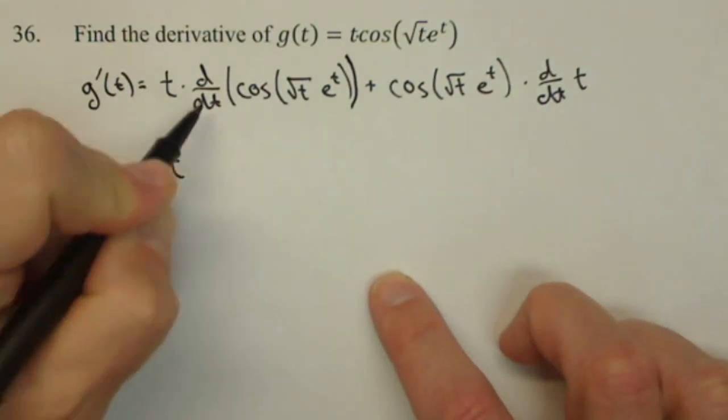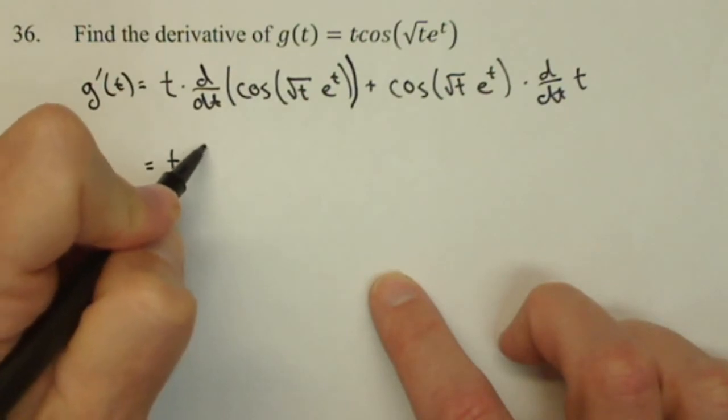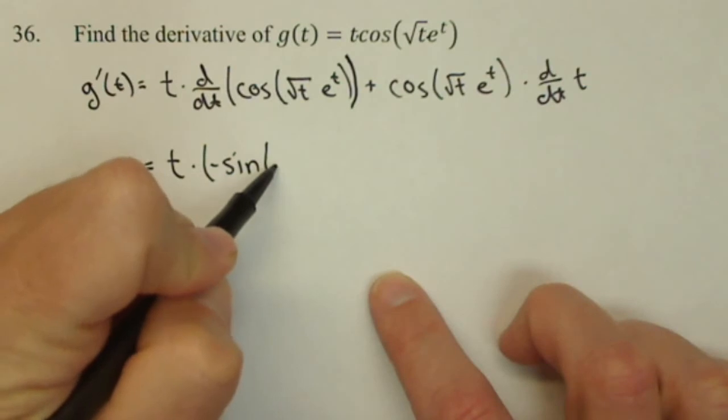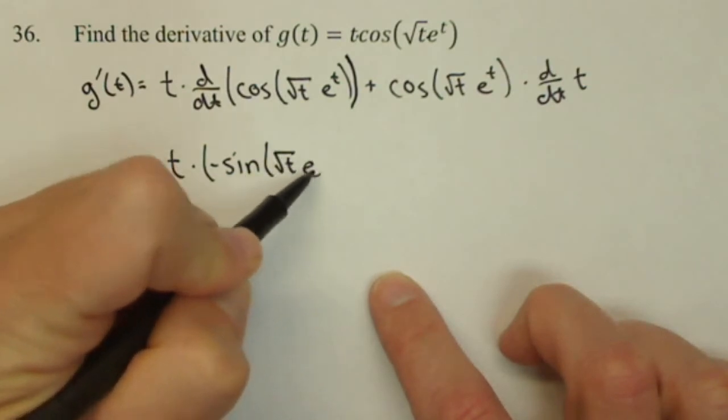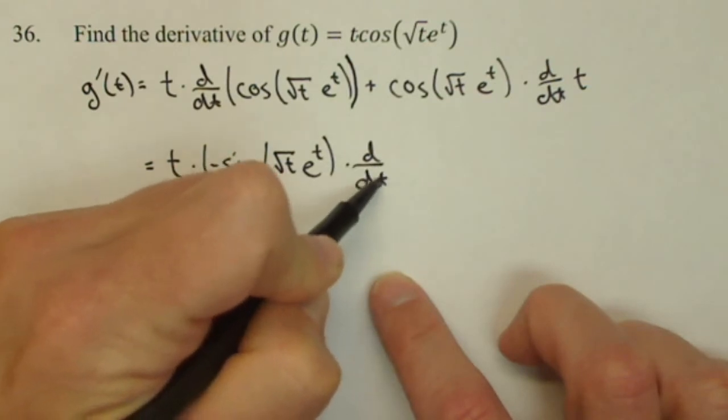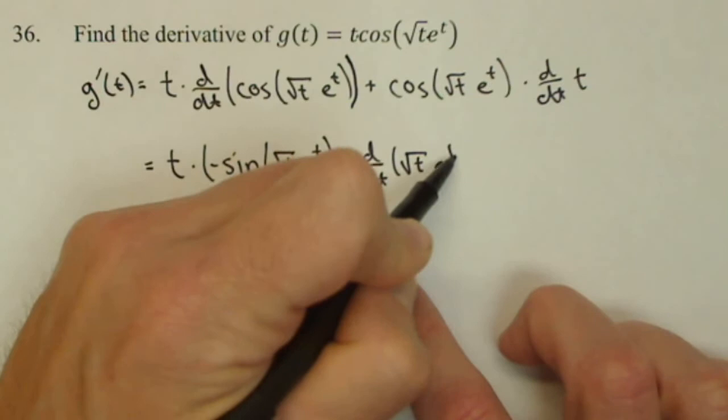So here I have t, now let's start this derivative. Derivative of cosine is negative sine, leave the inside alone, square root of t e to the t times the derivative with respect to t of the inside, because that's going to be from a chain rule, square root of t e to the t.